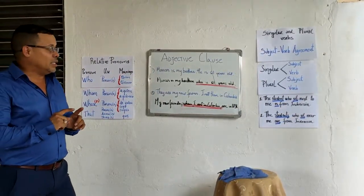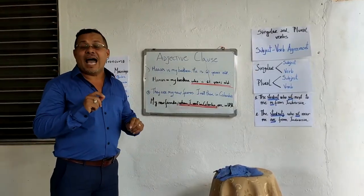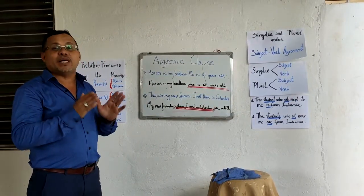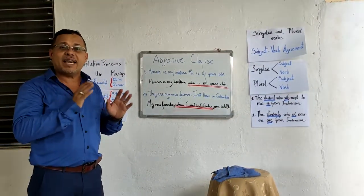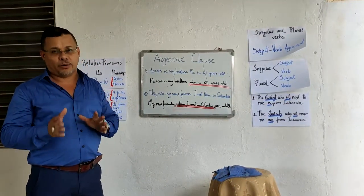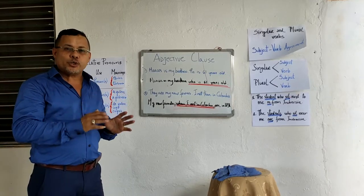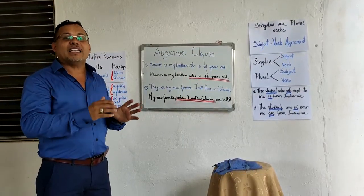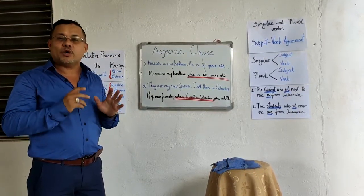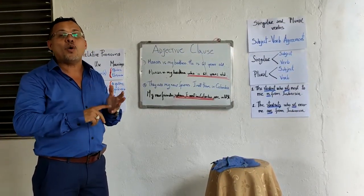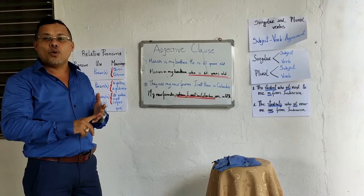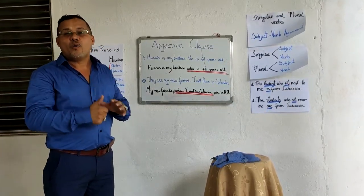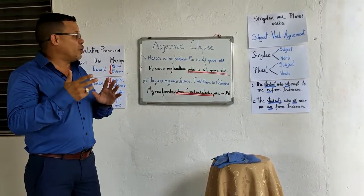First of all, remember that an adjective clause is a clause that modifies a noun or a pronoun. Usually it starts with a relative pronoun such as who, whom, whose, where, when, which, why, or that.